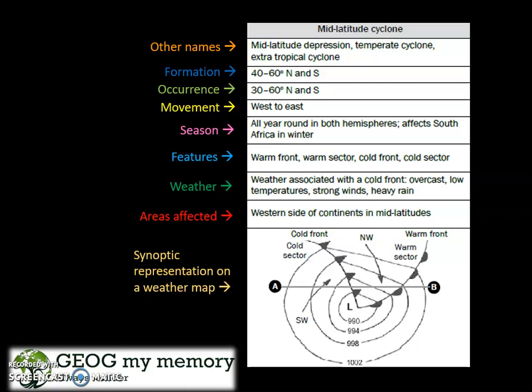Their other names include mid-latitude depression, temperate cyclone, and extra-tropical cyclone. They form between 40 to 60 degrees north and south of the equator, and occur between 30 to 60 degrees north and south. They move from west to east.